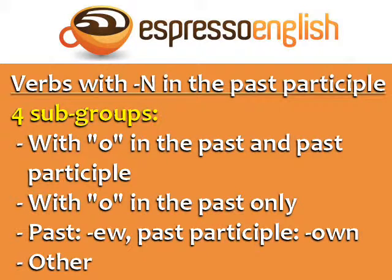A number of irregular verbs have N in the past participle. These can be divided into four subgroups: with O in the past and past participle; with O in the past only; verbs with the past form ending in EW and the past participle in OWN; and other.